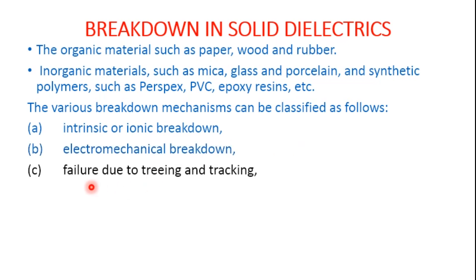Then next is failure due to treeing and tracking. When solid insulators are subjected to continuous operation over a period of time, the outermost layers become dried in nature, resulting in the formation of treeing. Current pulses then move from one end to another end of the insulator, resulting in tracking.